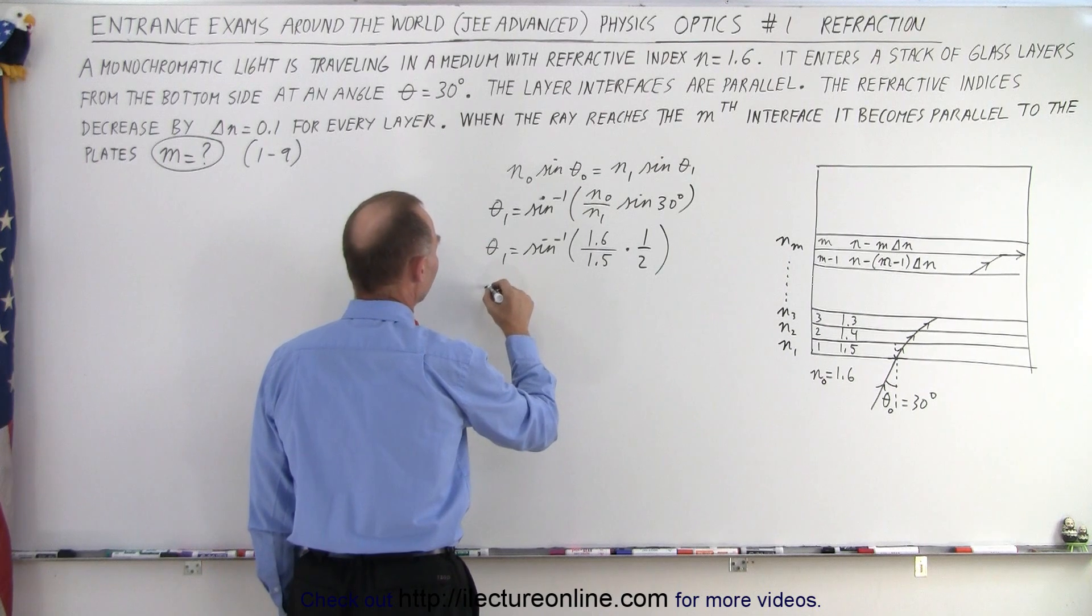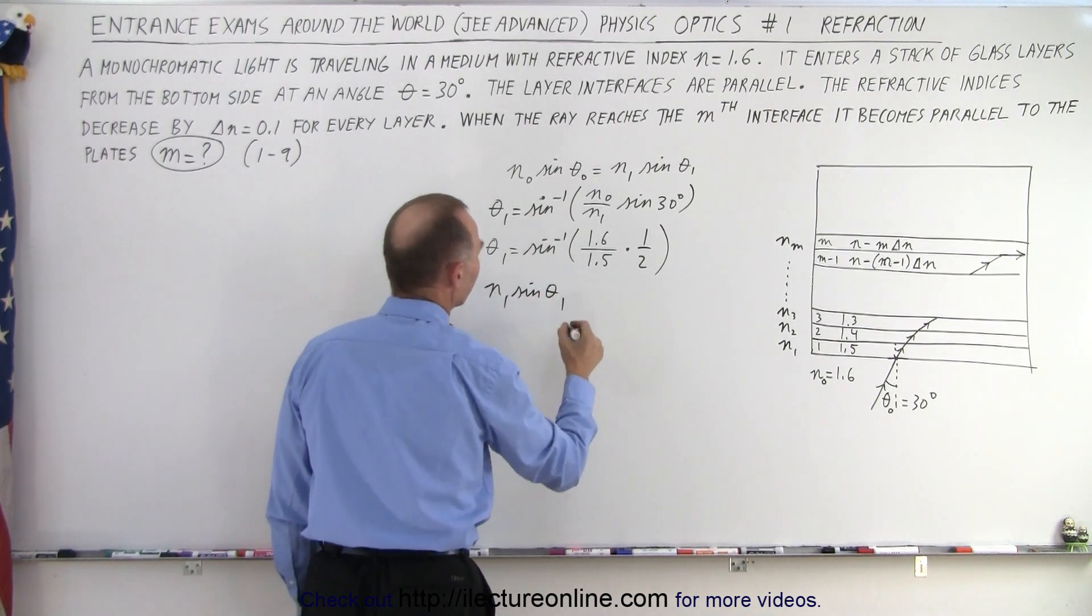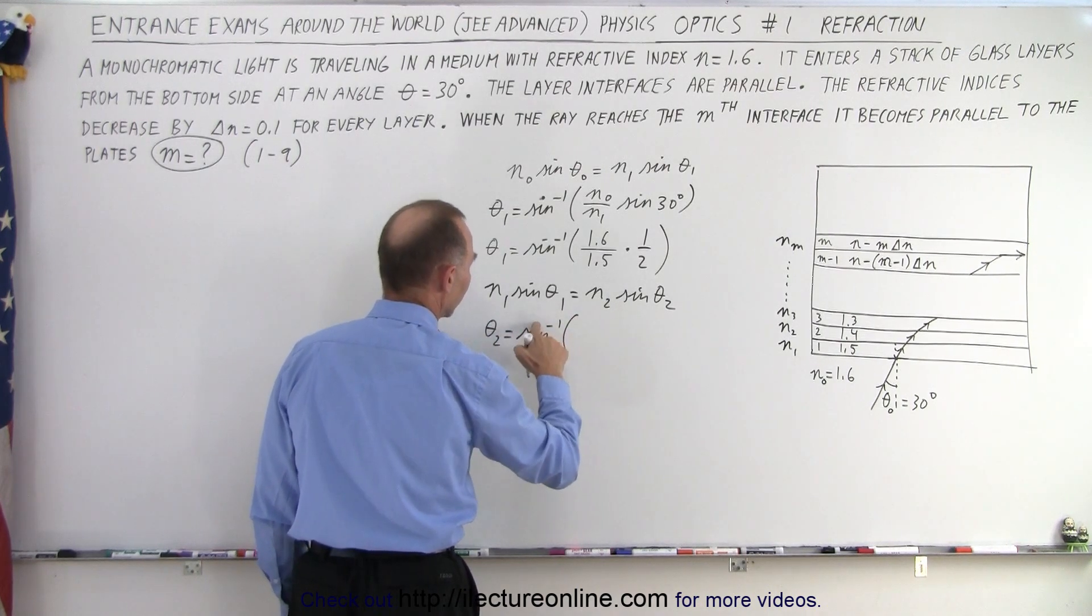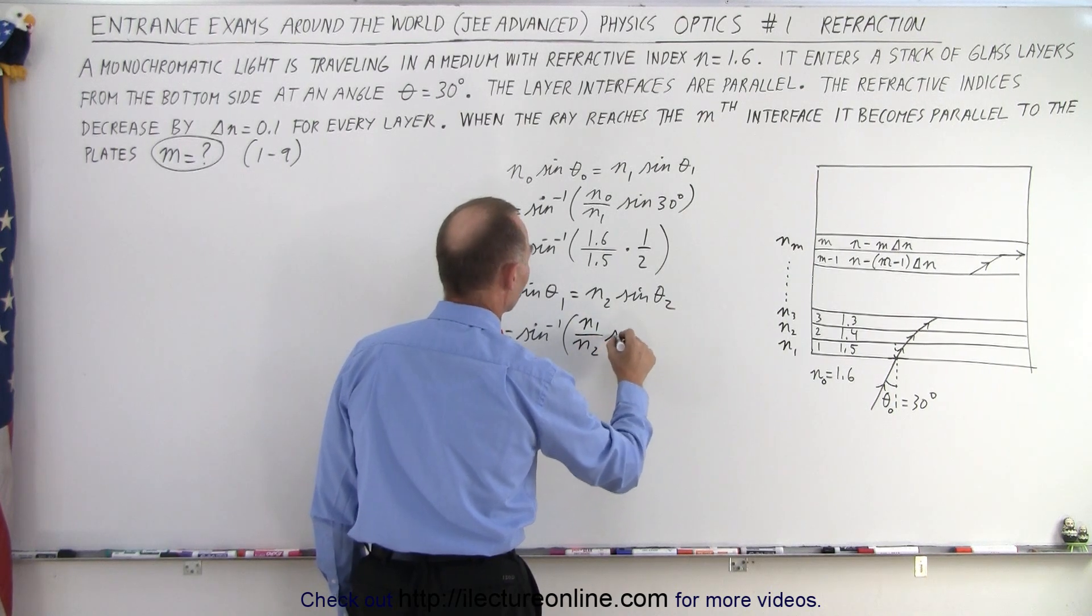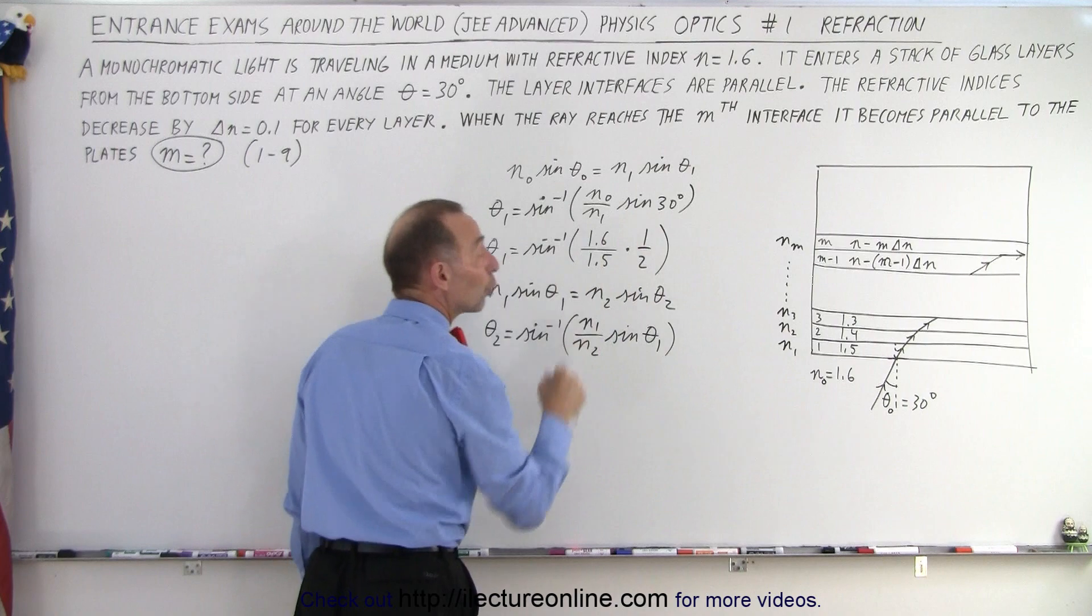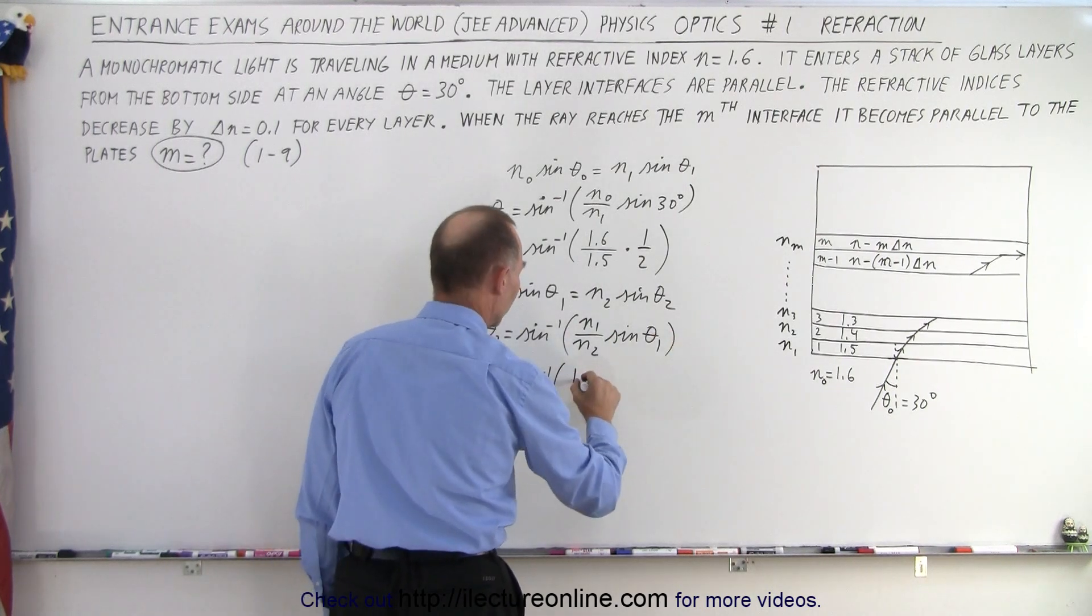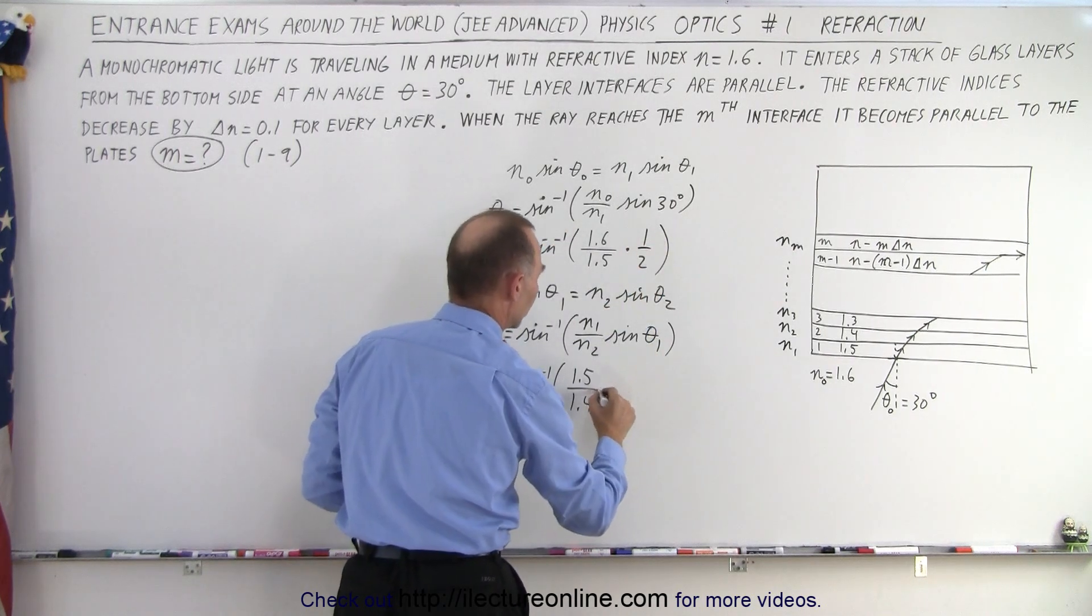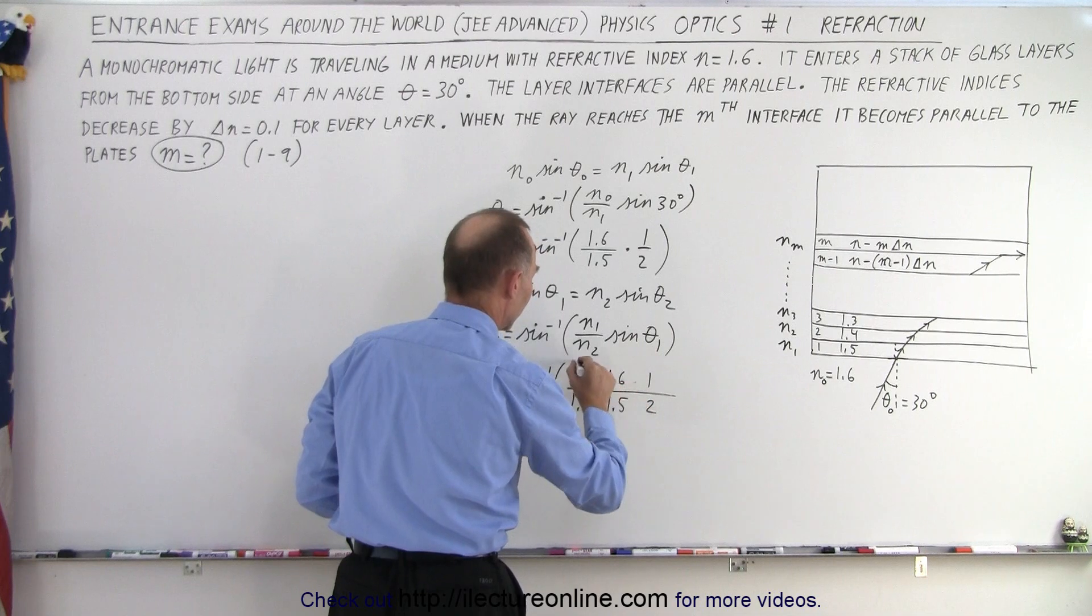Let's do the next boundary. So now we have N sub 1 times the sine of theta 1, which is this angle right here, equals N sub 2 sine of theta sub 2. We can see that theta sub 2 equals the inverse sine of N sub 1 divided by N sub 2 times the sine of theta sub 1. If the inverse sine equals that, then the sine of that is simply equal to the quantity in there. So theta sub 2 equals the inverse sine of 1.5 divided by 1.4 times the sine of this angle, which equals 1.6 over 1.5 times 1 over 2. These are all multiplied together.